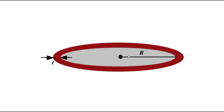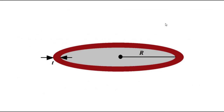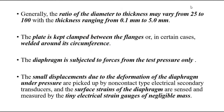The ratio of diameter to thickness is very important for diaphragm-type pressure measurement devices. This ratio generally varies from 25 to 100, and the thickness ranges from 0.1 millimeter to 5 millimeters.